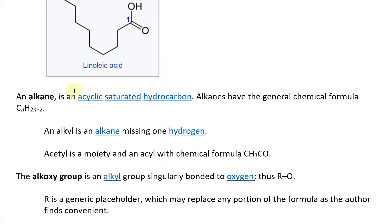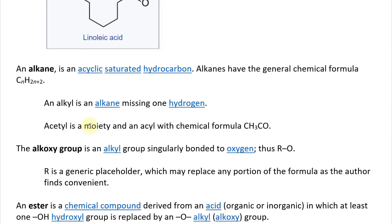An alkane is an acyclic saturated hydrocarbon — hence why I went over those terms, as it's a lot of terminology. Alkanes have the general chemical formula CnH2n+2. An alkyl is an alkane missing one hydrogen, pretty much the same thing.